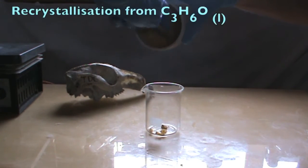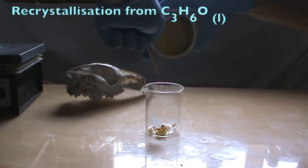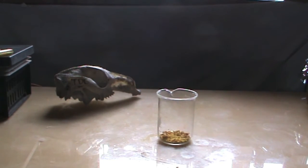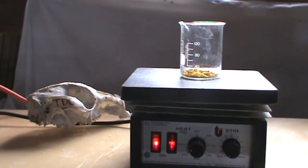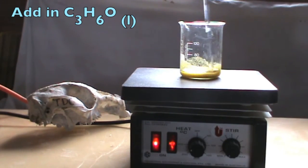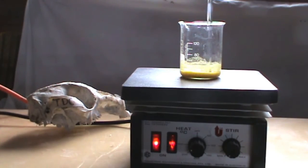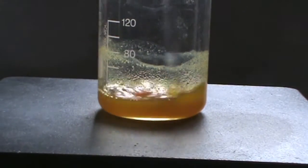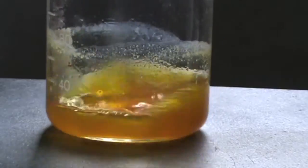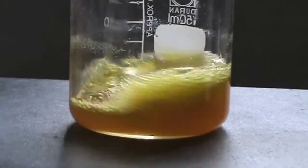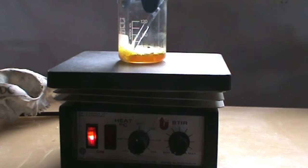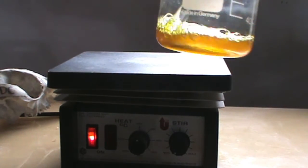In this step we will be recrystallizing the piperine powder using acetone. Place the beaker containing the piperine powder on a hot plate and switch the heating on. To this add in a small amount of acetone and stir the mixture. After a short while the acetone boils and all of the piperine powder will dissolve. Once the piperine has dissolved in the hot acetone solution remove it from the hot plate and allow it to cool to room temperature.